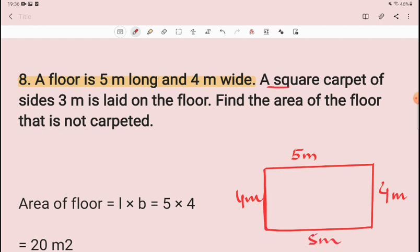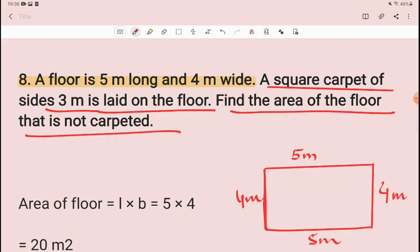First, a square carpet of side 3 meter is laid on the floor. Find the area of the floor that is not carpeted.